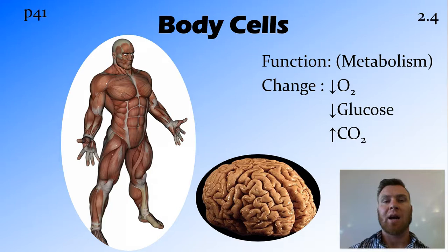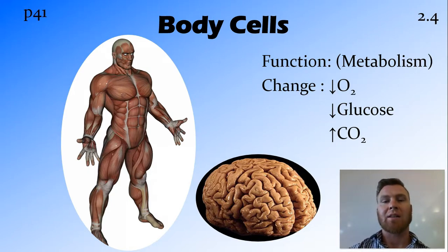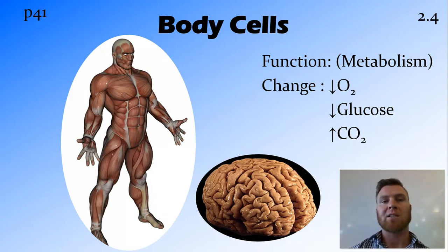All these cells have metabolism occurring in them. They require energy to function, and from the metabolism equation we know that these require oxygen, they require glucose, and they produce carbon dioxide as a byproduct. So any blood that's passing through or past these cells is going to decrease in the amount of oxygen, decrease in glucose, and increase in carbon dioxide.